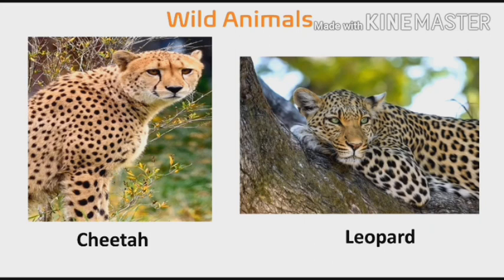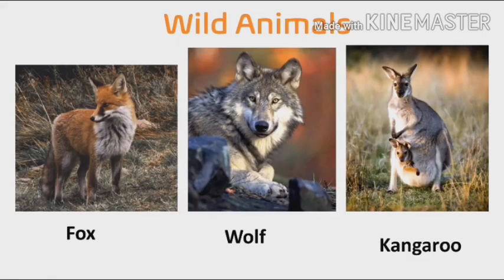the fastest animal in the world. Next, leopard. Let's see the difference between both of them. Cheetah has black spots on its body, as you can see in the picture. And on the body of leopard, the black spots appear more yellow or orange in color.